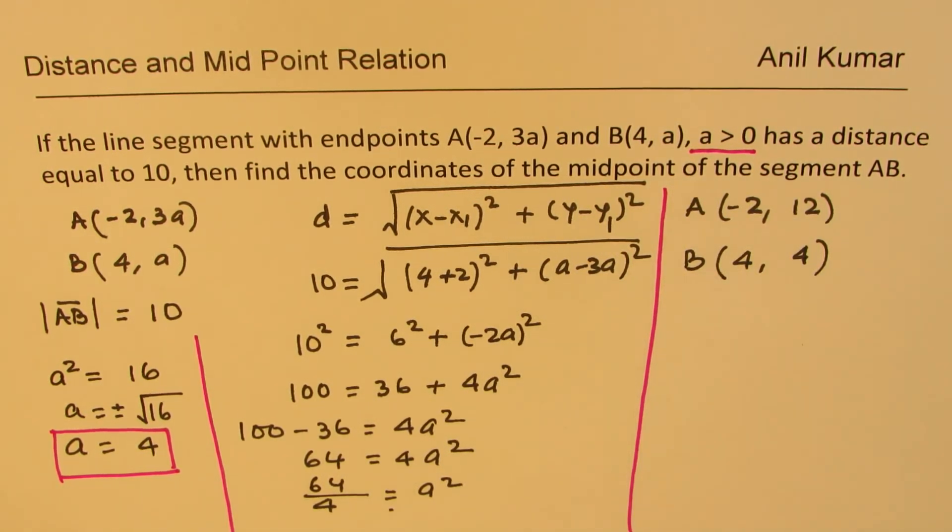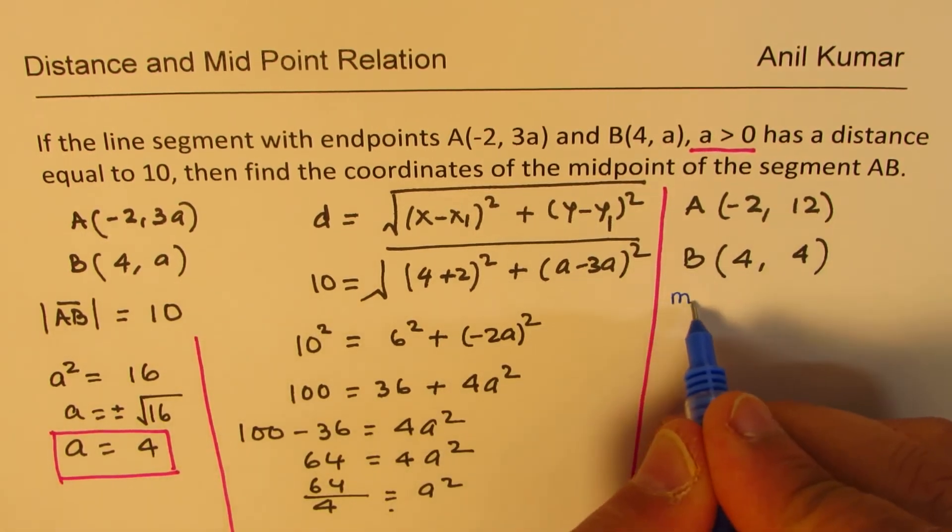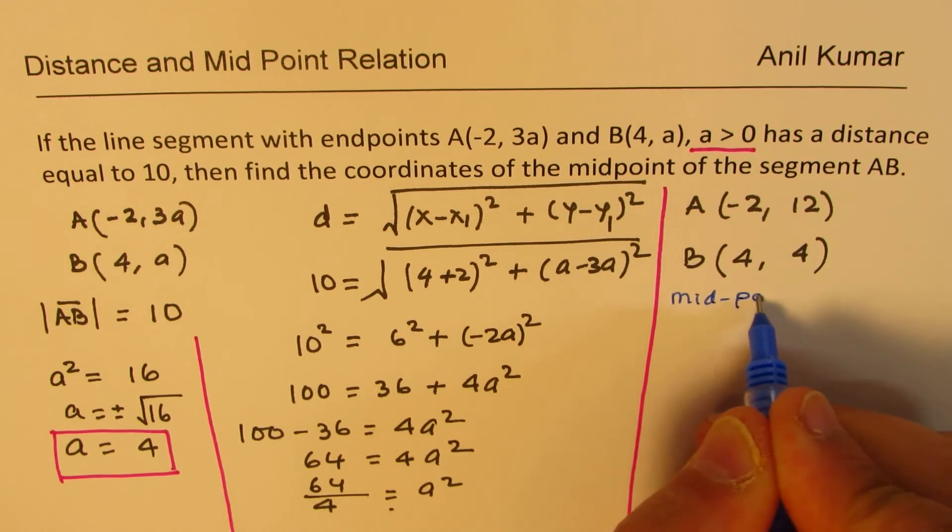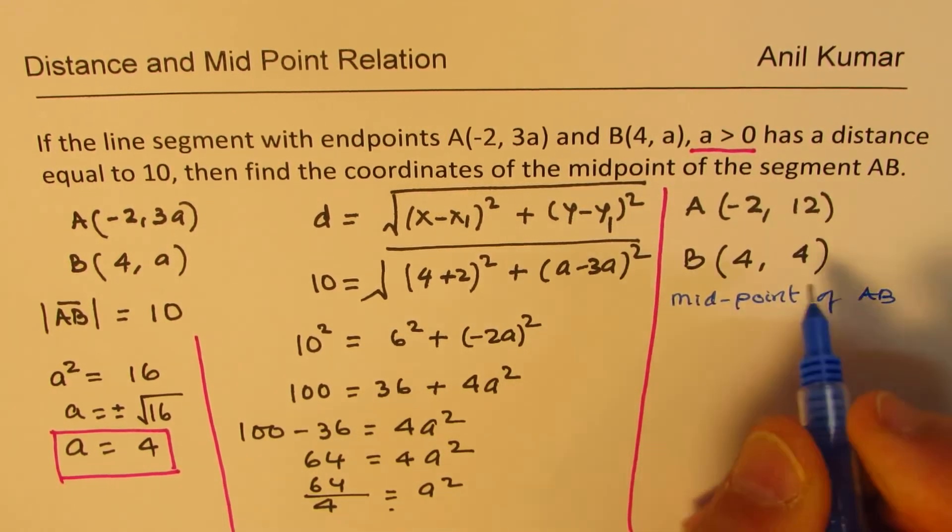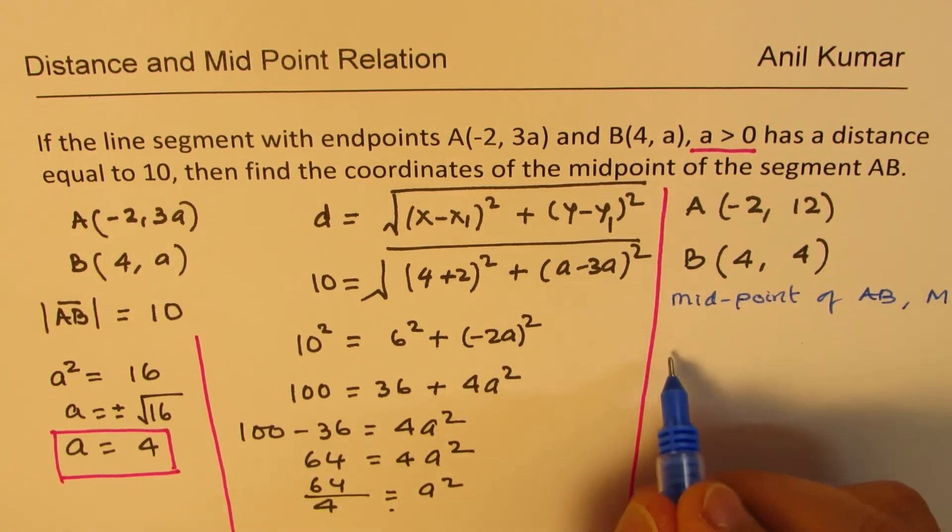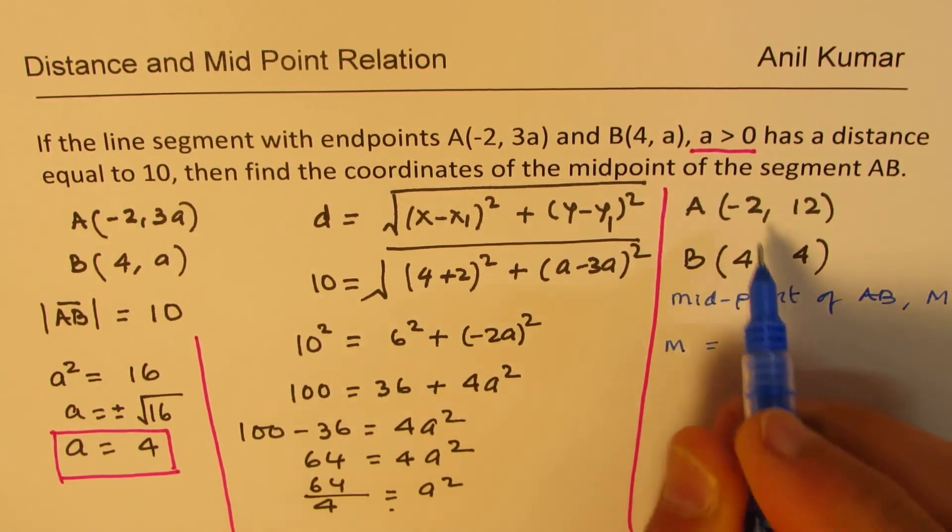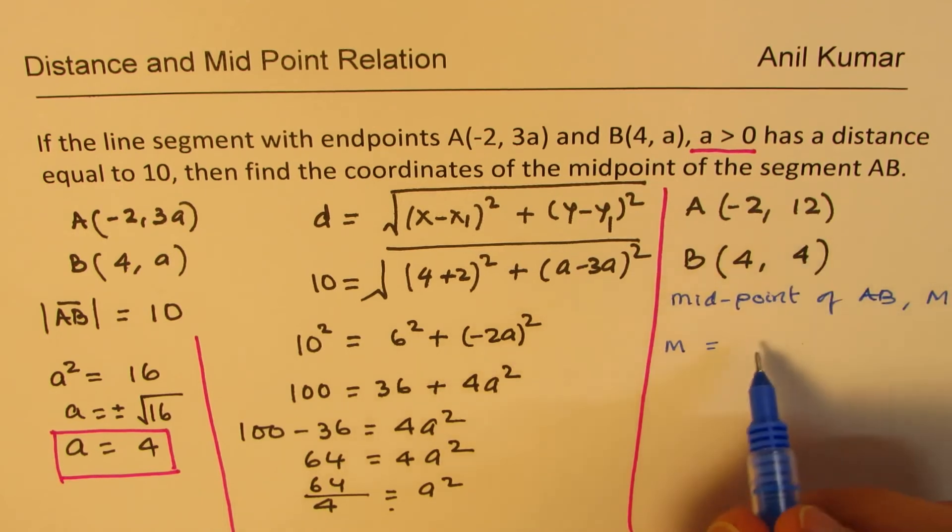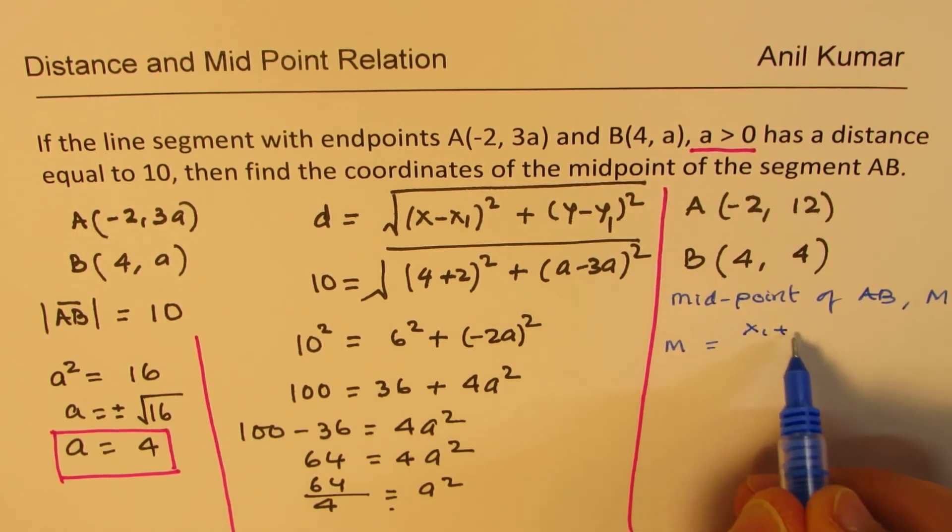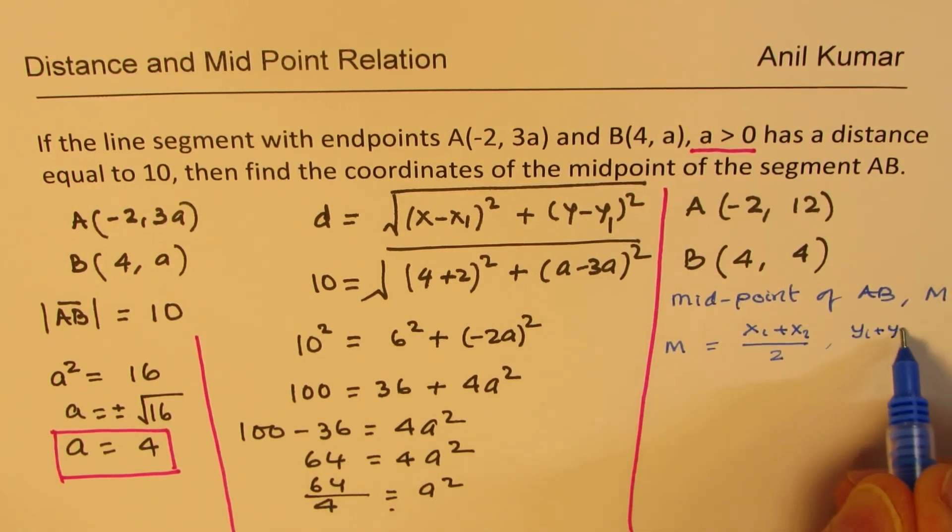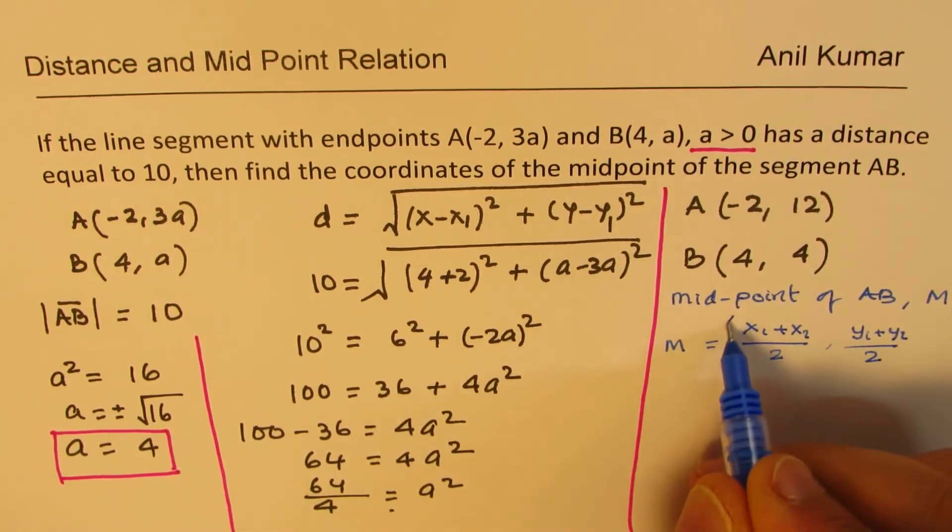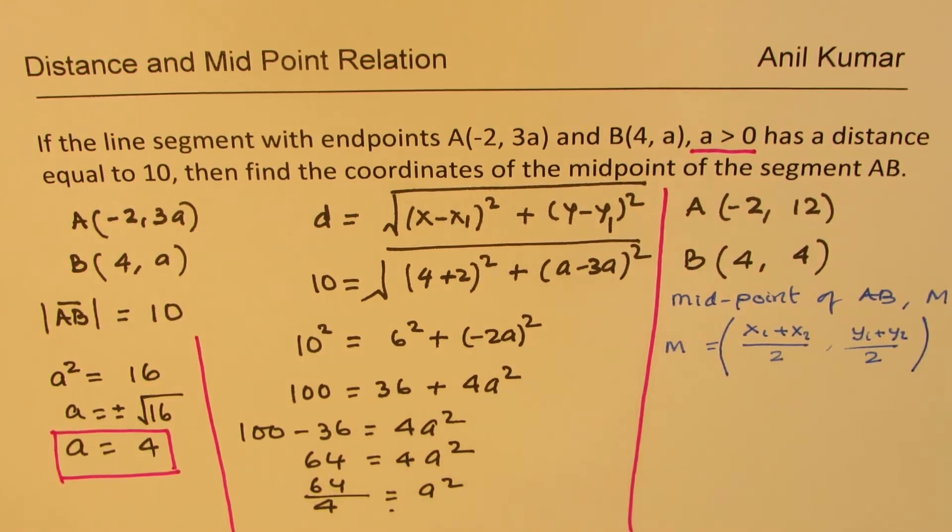Let us find the midpoint of the segment. The midpoint of AB, let us call it M, will be the average value. The formula is (x₁ + x₂)/2 for the x coordinate, and (y₁ + y₂)/2 for the y coordinate.